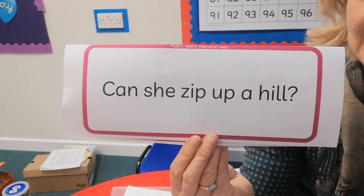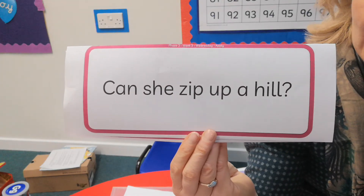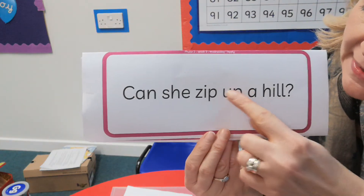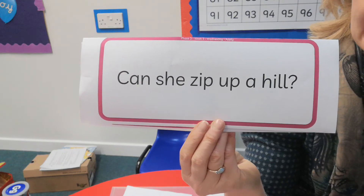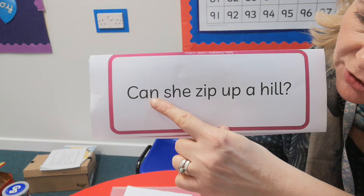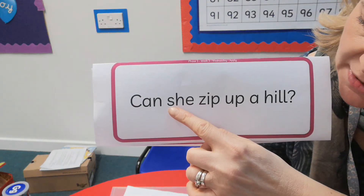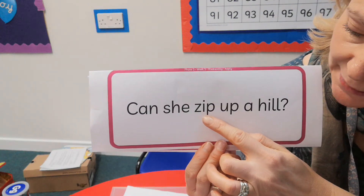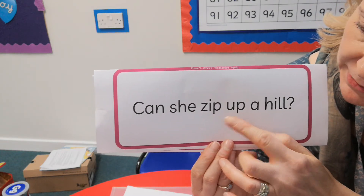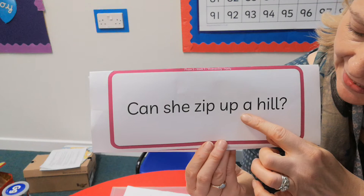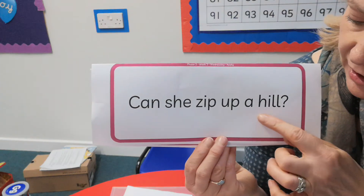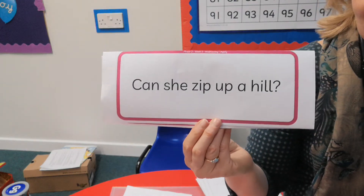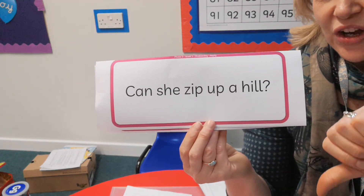Here is our last sentence today. Look for our new tricky words within this one. Capital letter, punctuated with a question mark and finger spaces — pause the video and have a read. C, a, n — can. Tricky word — shh, ee — she. Can she zip up a H, I, L — hill? Can she zip up a hill? I'll let you decide whether that's yes or no.